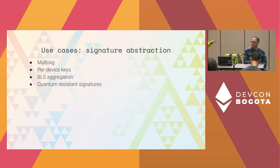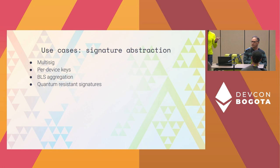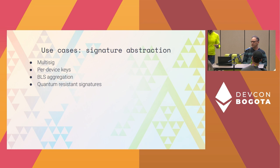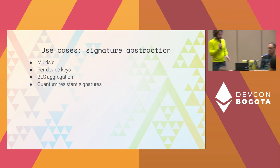One of the cool things that happened during ETH Bogota is a project implemented an idea we'd been thinking about. Most mobile phones have a signing mechanism, but the problem is it doesn't support ECDSA curves — it uses some other mechanism. Because account abstraction doesn't lock in ECDSA as the only way to sign, you can have paired-device keys: you get your phone, link it to your account, and now your phone can authorize operations. A team actually implemented that in the recent hackathon, which we thought was pretty cool.